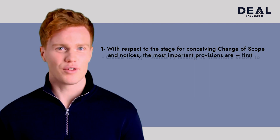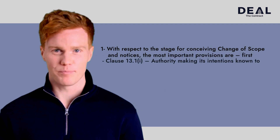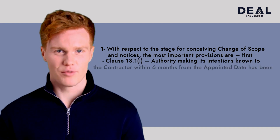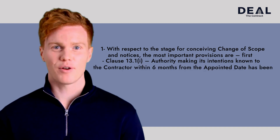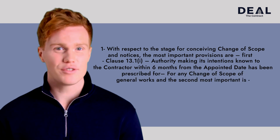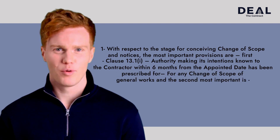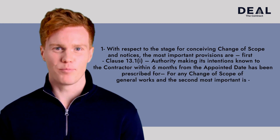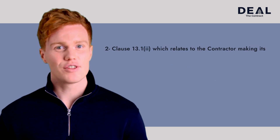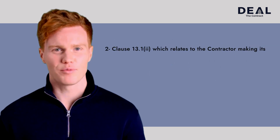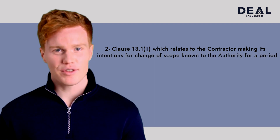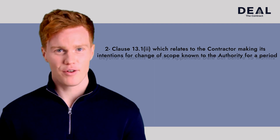The most important provisions are: first, Clause 13.1.1 — the authority making its intentions known for any change of scope of general works; and second, Clause 13.1.2 — which relates to the contractor making its intentions for change of scope known to the authority.